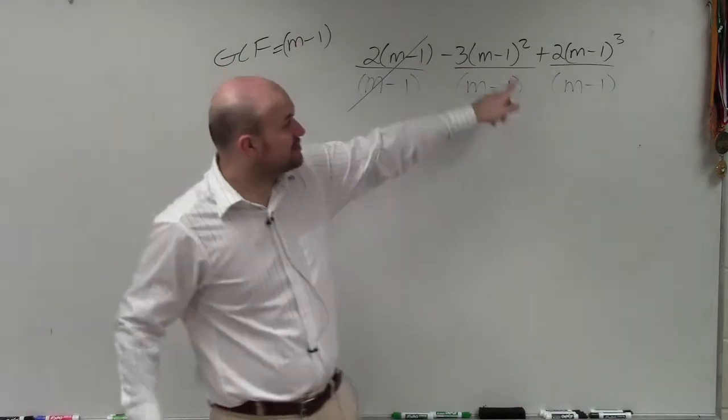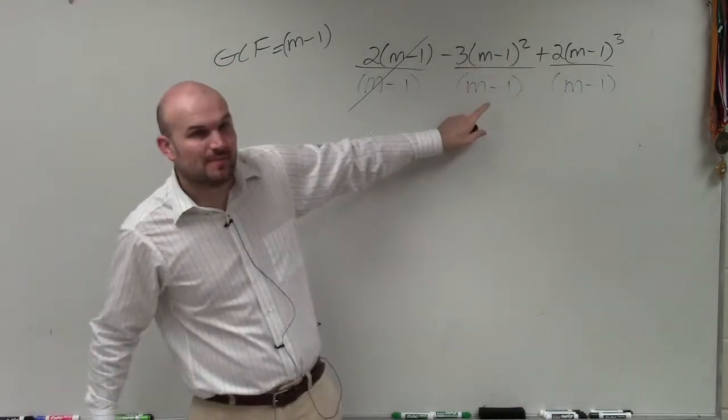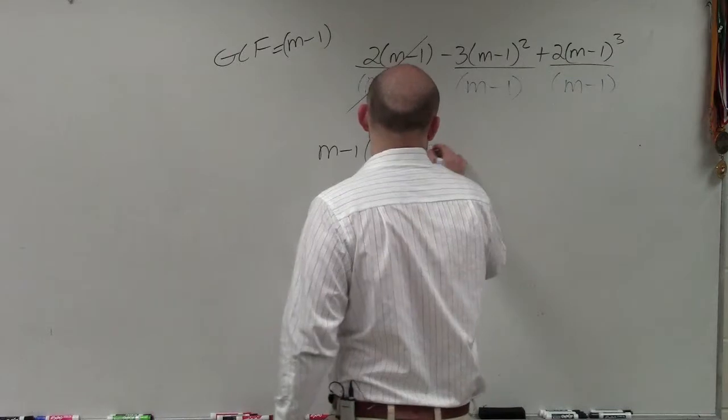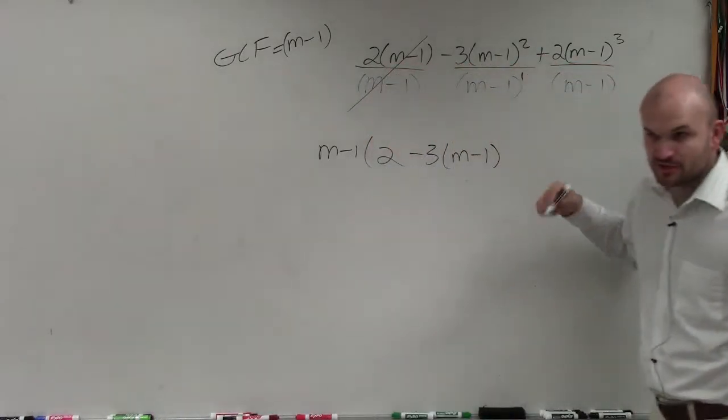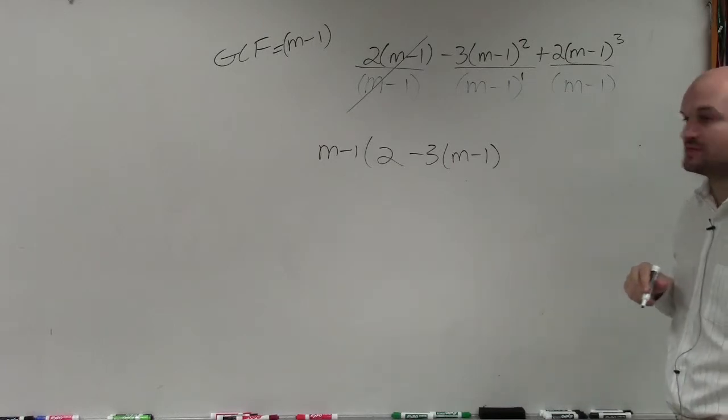Again, using the rules of exponents, just think of this as like x squared divided by x. That's going to leave you with minus 3 times m minus 1. You would subtract the exponents. 2 minus 1 would give you m minus 1 to the first power.